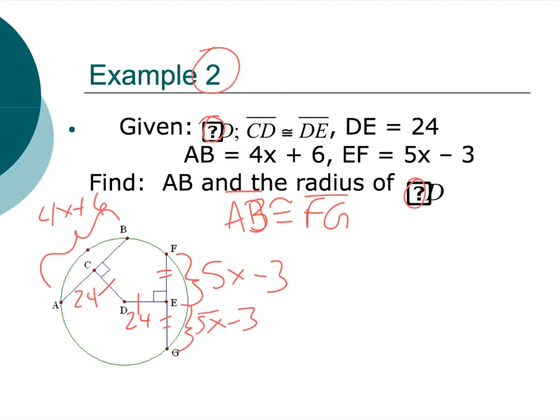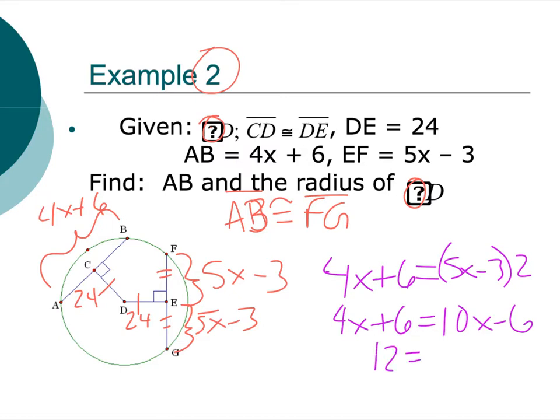All right. So that would mean that this is also 5x minus 3. And there are a couple ways of solving this, but I'm going to go this route that I'm going to do right now. So let's go with 4x plus 6 is equal to the 5x minus 3 plus the 5x minus 3. And I guess that would just be like times 2, right? So we could set it up that way, which gives us 4x plus 6 equals 10x minus 6. I'm going to get the x's on one side, number on the other. So I'll get 12 is equal to 6x. So x equals 2.